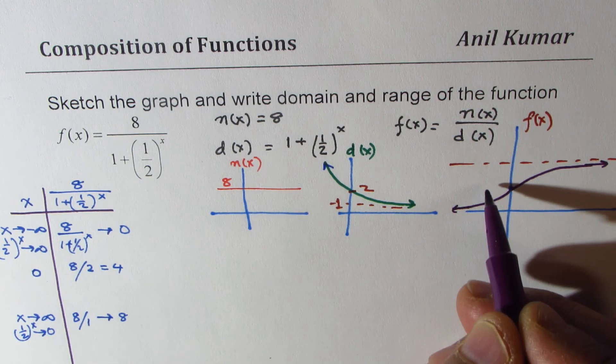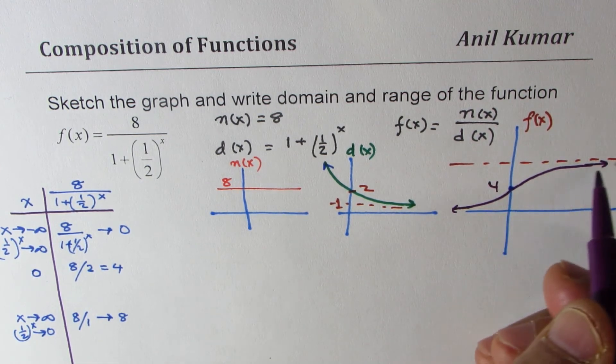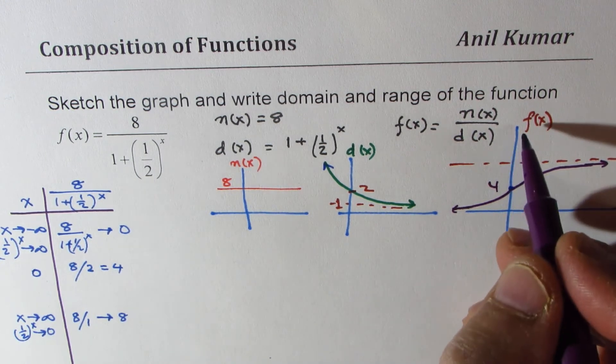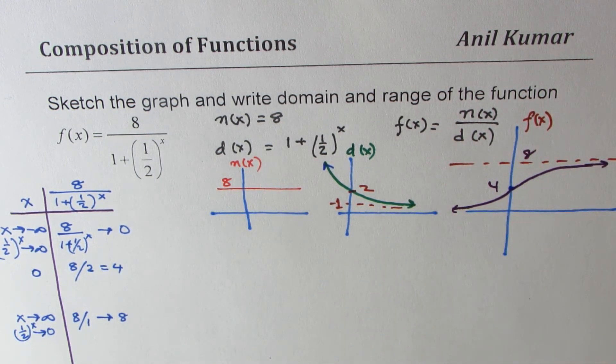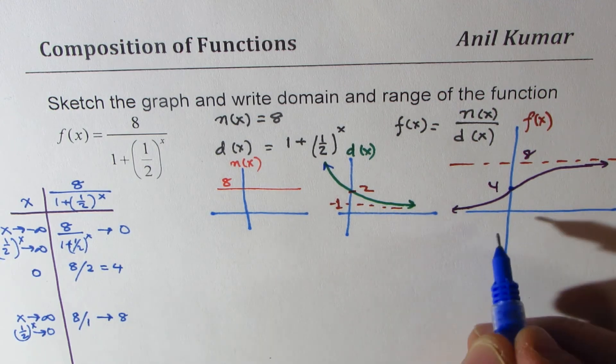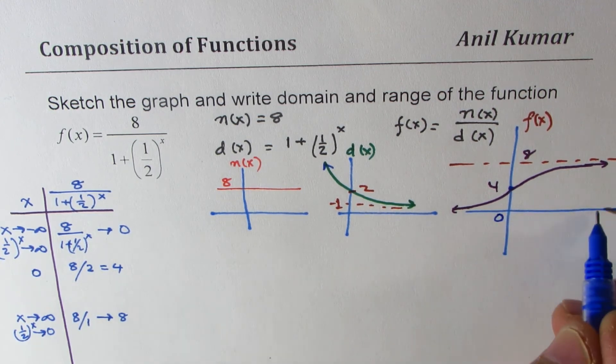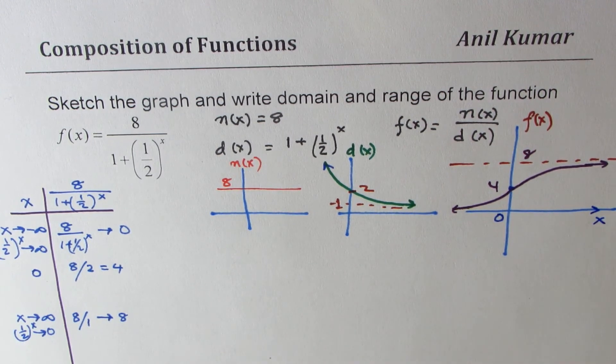So now from the diagram you can clearly see the range of the function. So that becomes the function itself, it is approaching 8. So we can write down the sketch is right there and now we can write the answer.